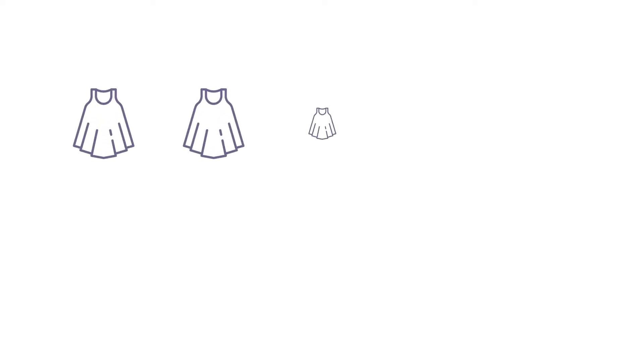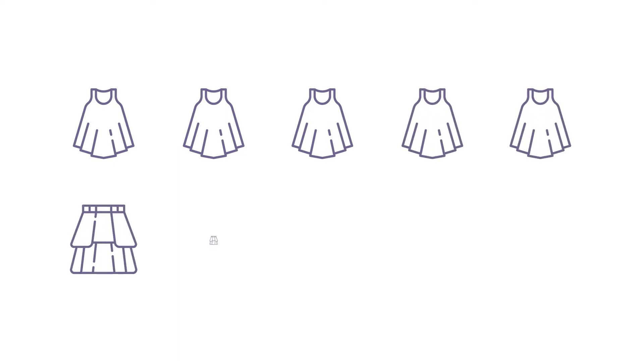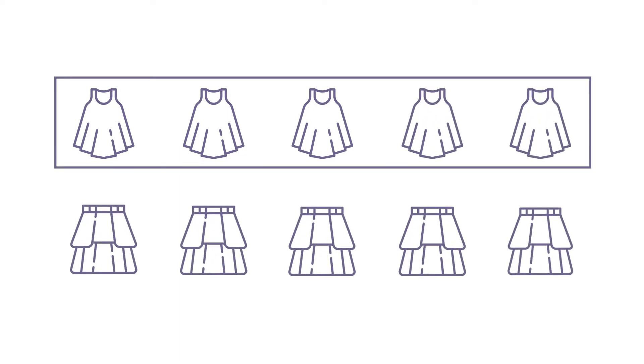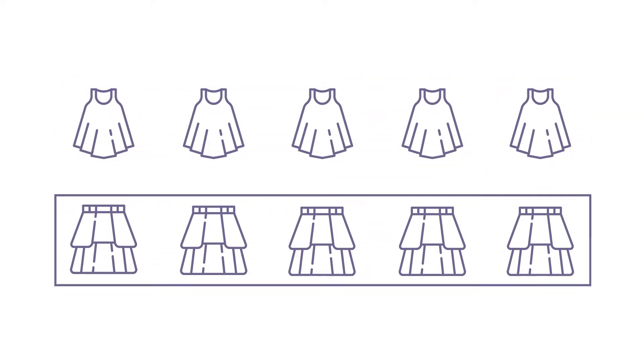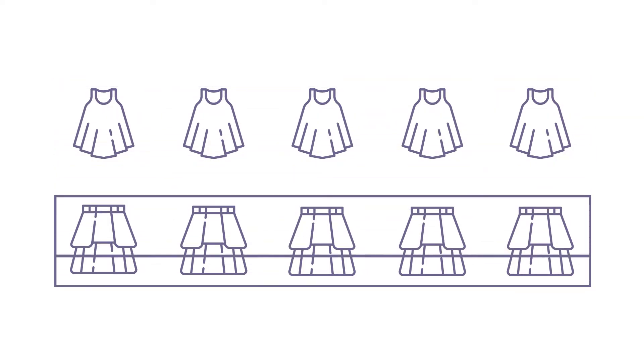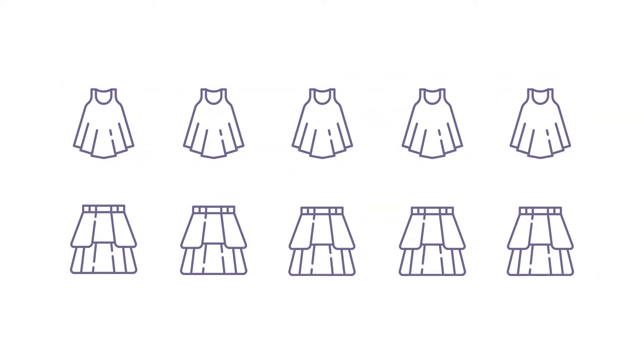The second step is object detection — locating objects within the image set. This is the process of locating an object, which entails segmenting the picture and determining the location of the object. Using our previous fashion example, the algorithm could locate skirts, blouses, trousers, etc. In this case, the model can be trained to recognize blouses in the upper part of the image and skirts in the lower part.